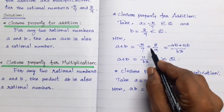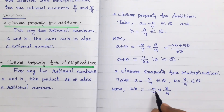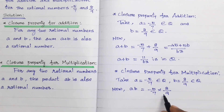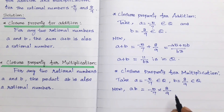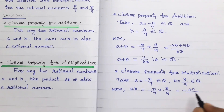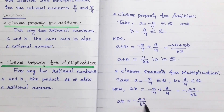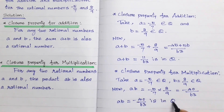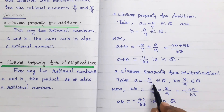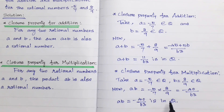This is the closure property for multiplication. Multiplying numerator by numerator and denominator by denominator, a times b equals minus 40 divided by 63, which is in Q. Since a and b belong to Q, a times b also belongs to Q. It is the closure property for multiplication. Thus, it is verified.